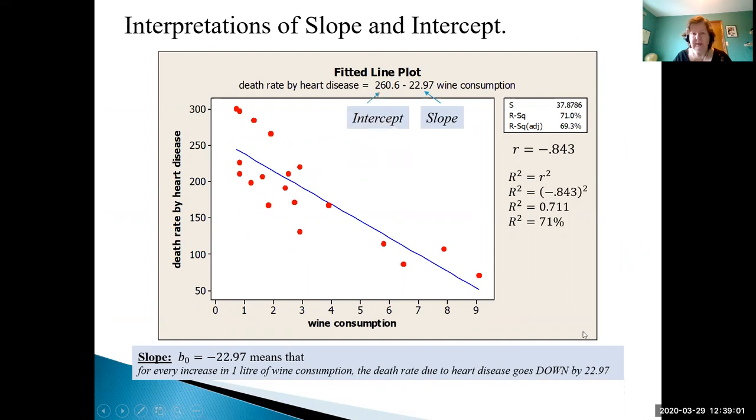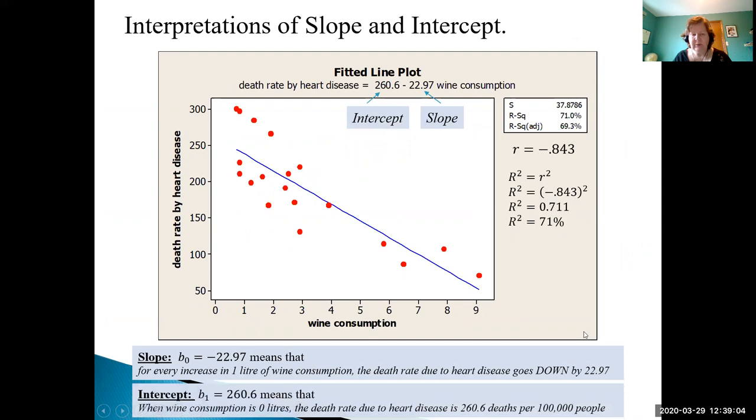Let's do the same thing for the intercept. For the intercept we have 260.6, and what that means is that when the wine consumption is zero liters, so somebody is not drinking any wine at all, there is still a death rate due to heart disease and it's 260.6 deaths per 100,000 people.